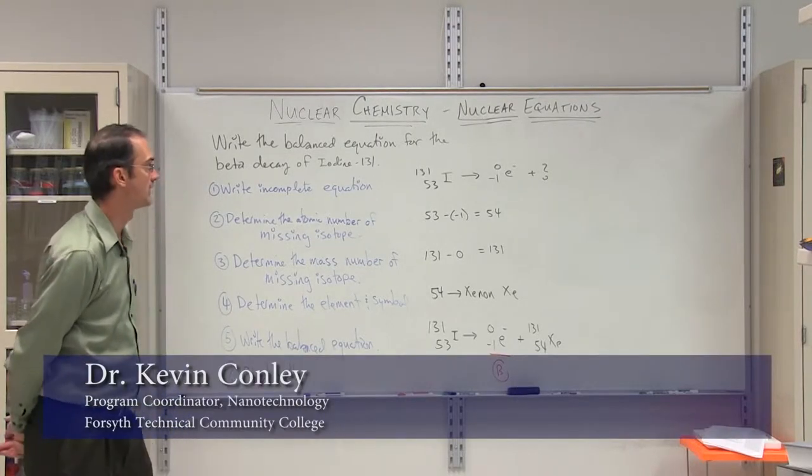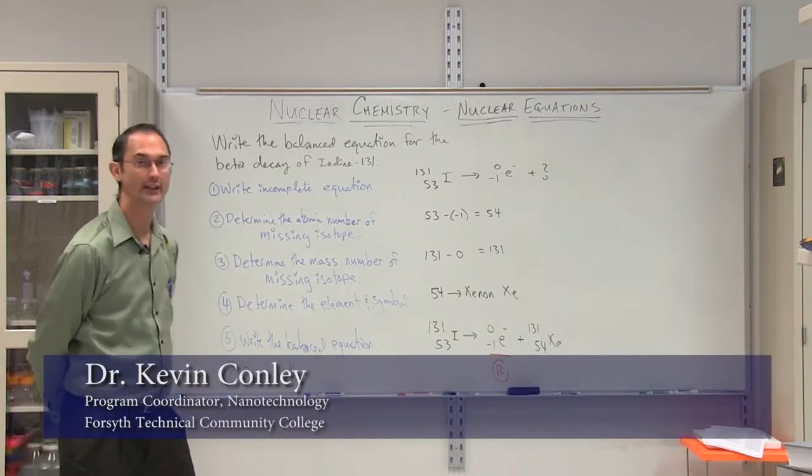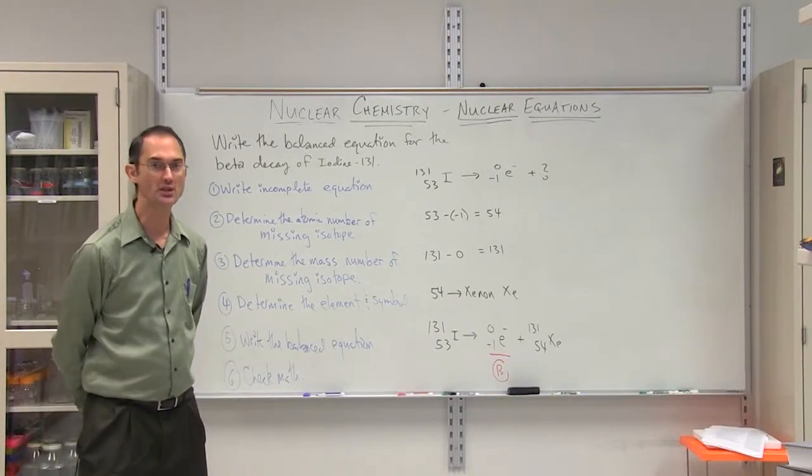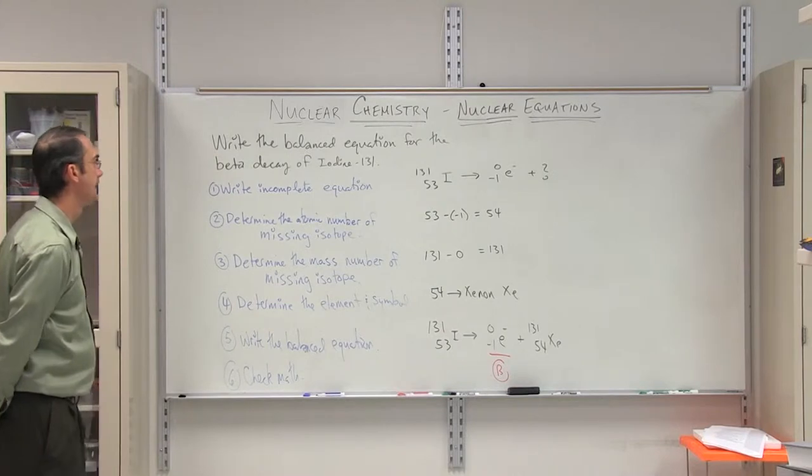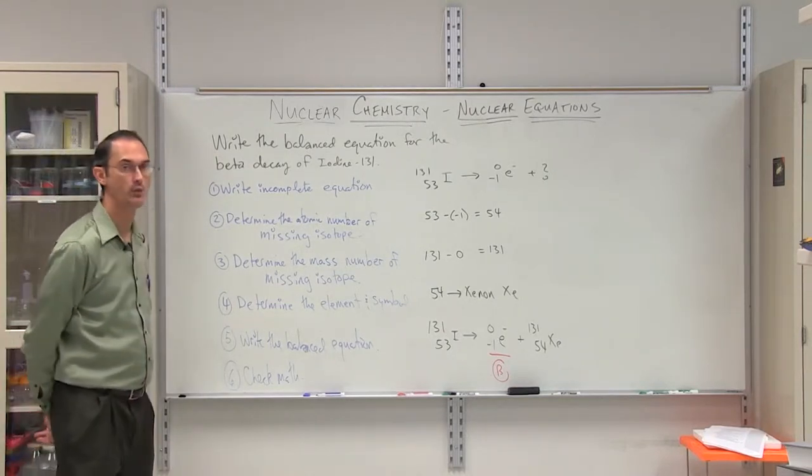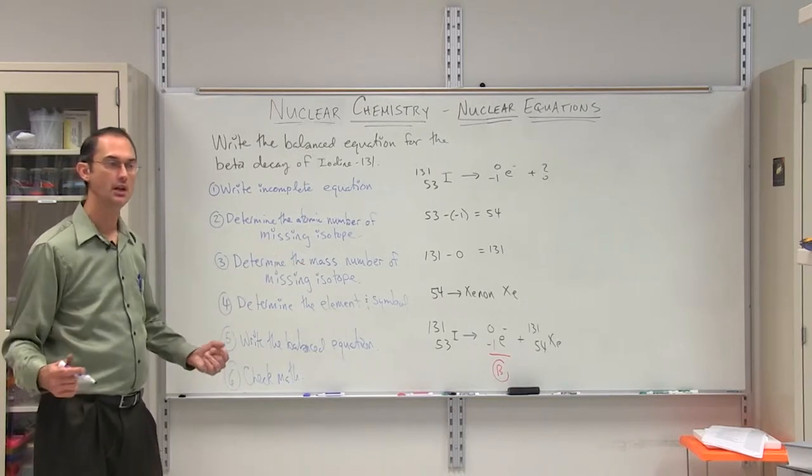In this case, I would like to go over writing a nuclear equation when you're given in words what the equation is. For example, if you are charged with writing the balanced equation for the beta decay of iodine-131, how would you go about doing this? Well, first of all,